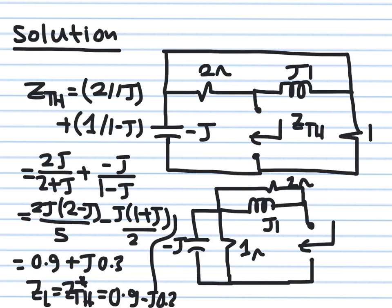Summing real parts: 2/5 + 1/2 = 0.4 + 0.5 = 0.9. Summing imaginary parts: 4/5 − 1/2 = 0.8 − 0.5 = j0.3. So Z_th = 0.9 + j0.3 Ω. For maximum power transfer, the load impedance must be the conjugate: Z_L = Z_th* = 0.9 − j0.3 Ω — same real part, opposite imaginary part.